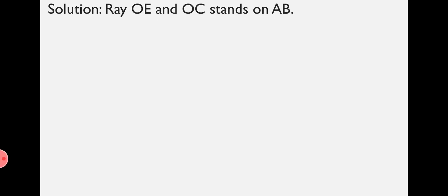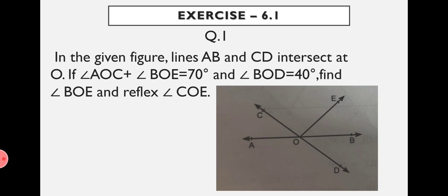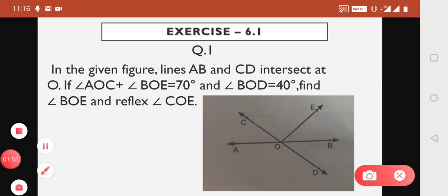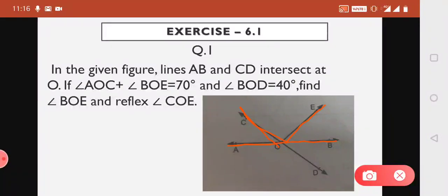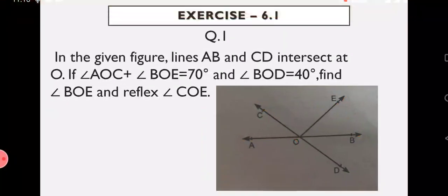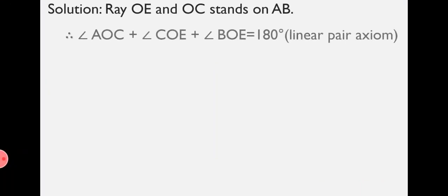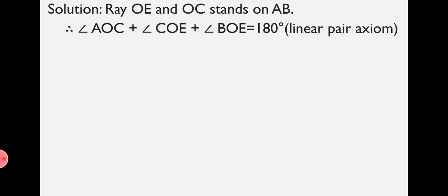Let's see in the figure. Ray OC and Ray OE stand on line AB, so we get three angles: Angle AOC plus Angle EOC plus Angle BOE equal to 180 degrees. We write Angle AOC plus Angle COE equal to 180 degrees using the Linear Pair Axiom.